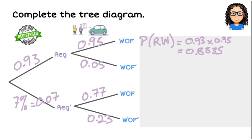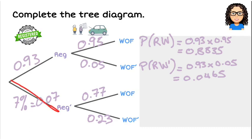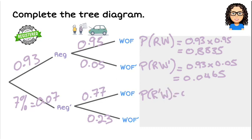The next combination is registered with no warrant. We multiply those two probabilities: 0.93 times 0.05, giving a probability of 0.0465. The third combination is no registration but has a warrant: 0.07 times 0.77, giving us 0.0539.